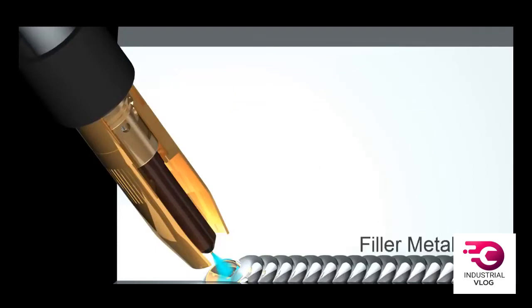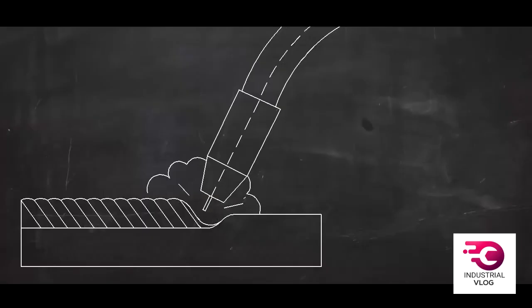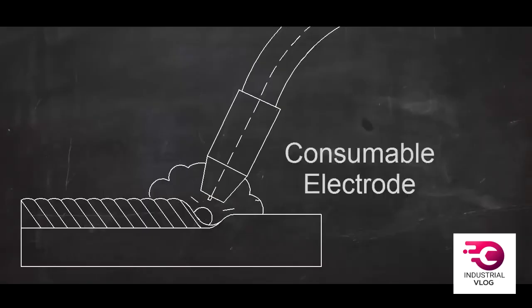MIG welding always adds filler metal to the joint. Because the wire electrode melts as it's being used, MIG is called a consumable electrode process.